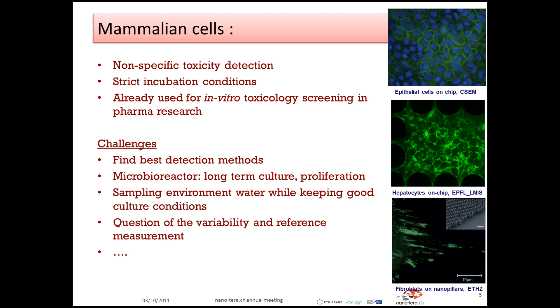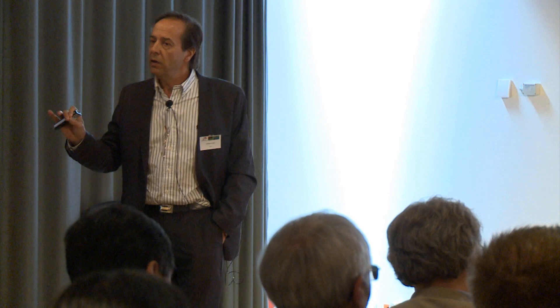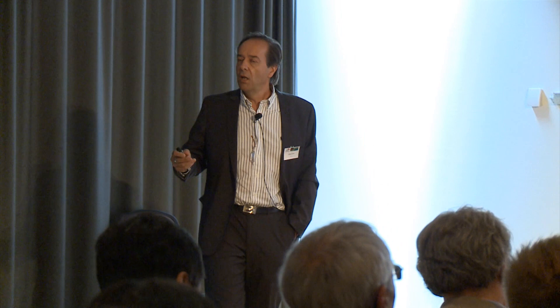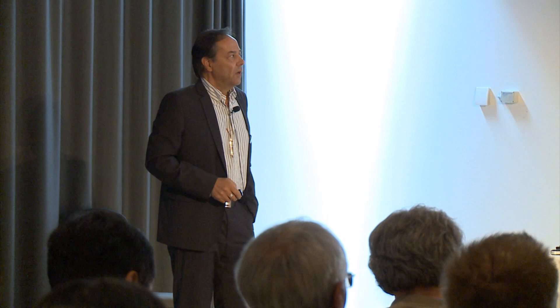In this project we chose to use mammalian cells, because they are physiologically closer to human cells. If we test for toxicity, it's good to use relevant cells. They are, of course, non-specific in detection. The problem is they need strict incubation conditions, but the advantage is they are already well-known in drug toxicology, where they are routinely used with sophisticated readouts — but not in incubators. So the challenges are to find the detection methods, make the bioreactors, and so on.